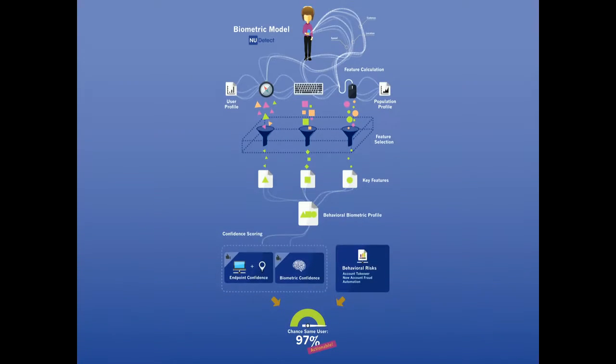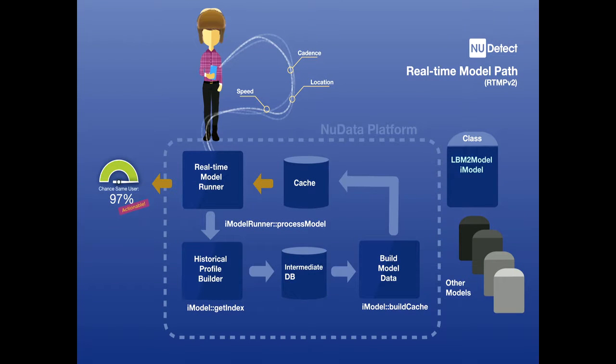So getting into that behavioral biometric model, what you're seeing here is the NuDetect real-time model path. This is the decisioning engine that does all of the analytics in real time for our customers. What we do in about 50 milliseconds is we take in all of those data points that Ryan was talking about, all those features that are derived from the current session. We take those features, these key features, we read them into a real-time model runner. That runner also has access to real-time caches within our production environment that are read-optimized so that we can pull in historic data about this user and the customer populations. And we turn that around, again, in about 50 milliseconds and spit that as a score back out to our customers. And we do this for a number of different types of models. This is just the biometric model we've been talking about. All these are calculated in real time and provided back to the customers' intelligence.